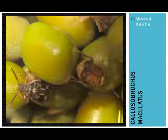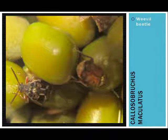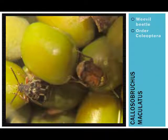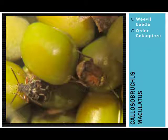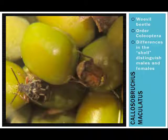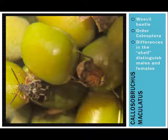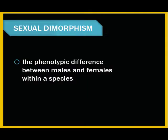Callosobracchus maculatus is a type of weevil beetle in the insect order Coleoptera. These insects can be identified by the hard shell-like body that encases the wings. In these bean beetles, the differences in the outer shell are used to differentiate between sexes. Sexual dimorphism, or a phenotypic difference between males and females within a species, is often used to determine sex.